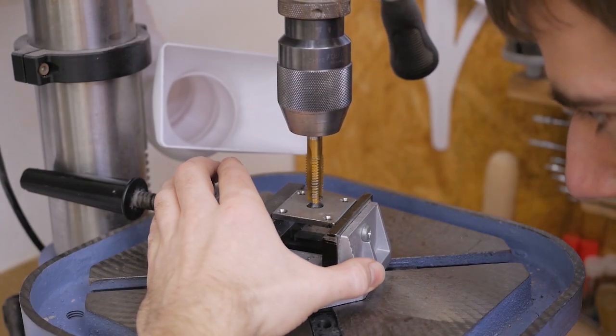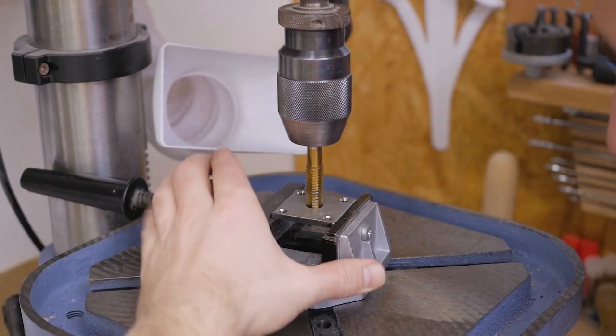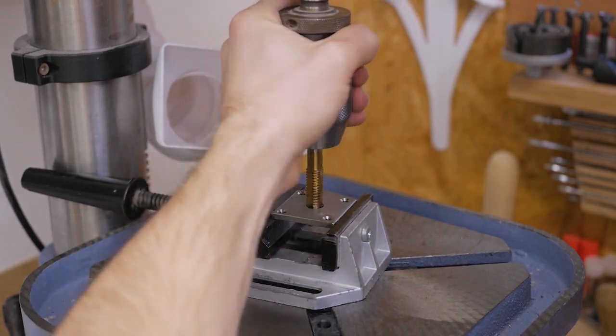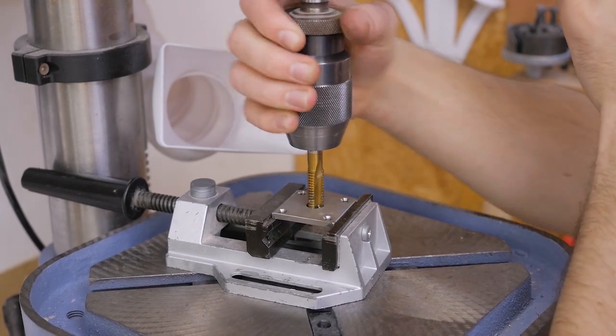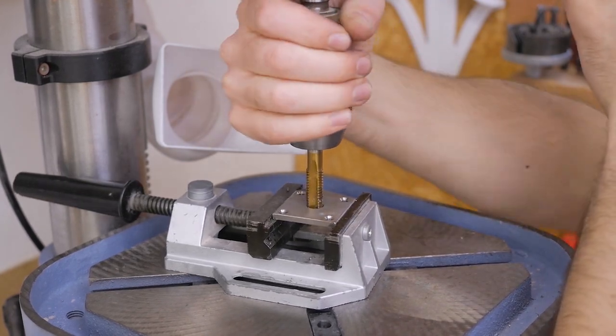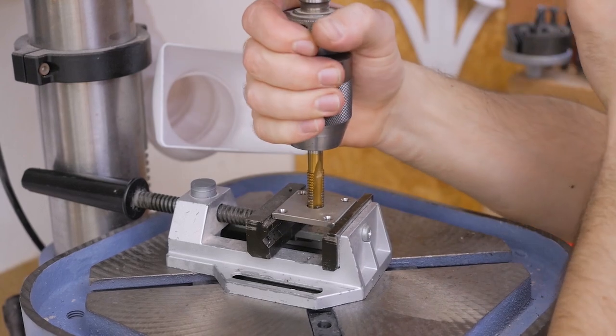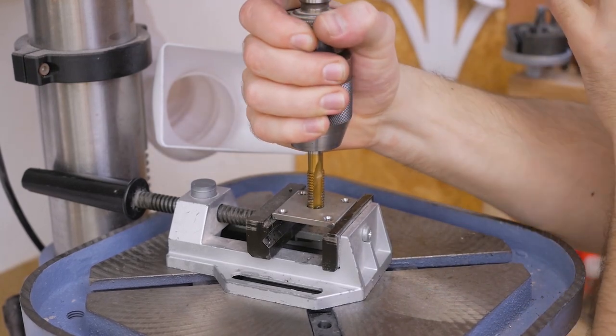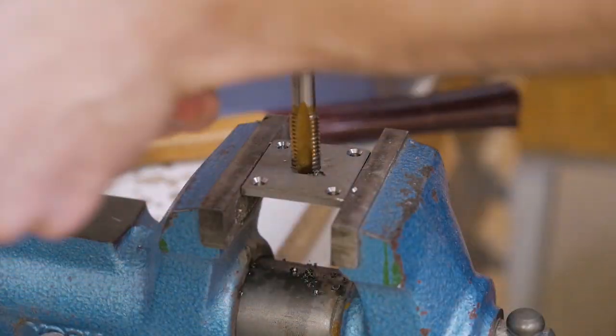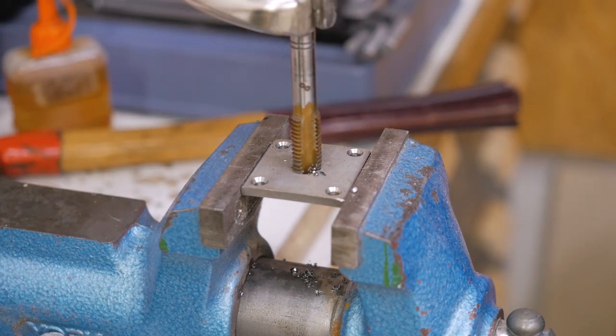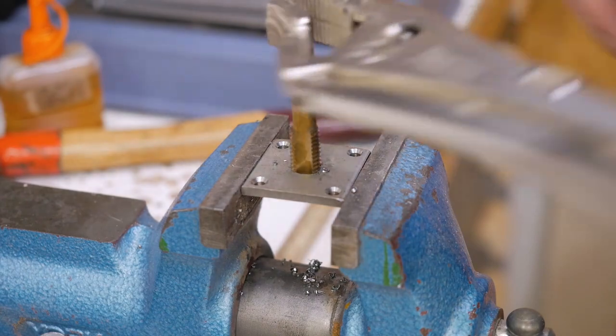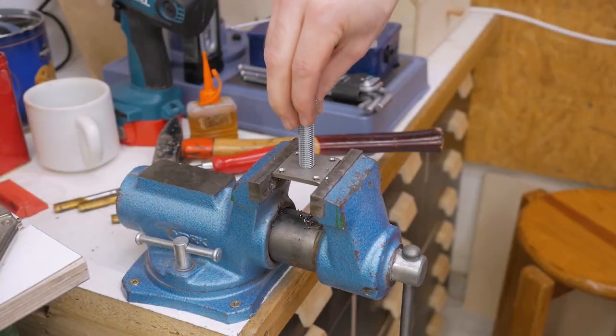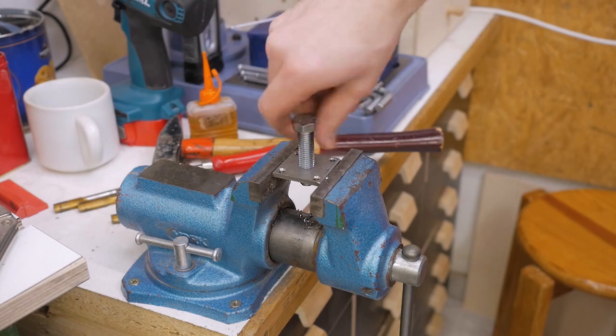Next is tapping the hole in the middle with M12. Now M12 taps come in a set of three. This is the first cutter and I'm starting this at the drill press to make sure everything is perpendicular. Unfortunately I don't have a big tap holder so a vice grip will do. A tap this size fortunately doesn't break that easily. Each of the taps cuts a little bit more of the threads so you don't have to do it all at once.